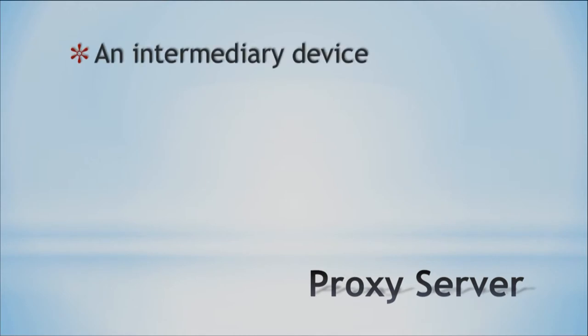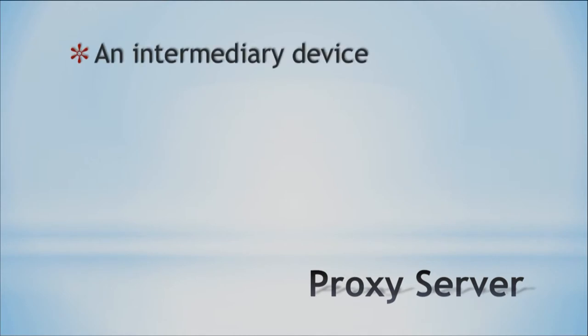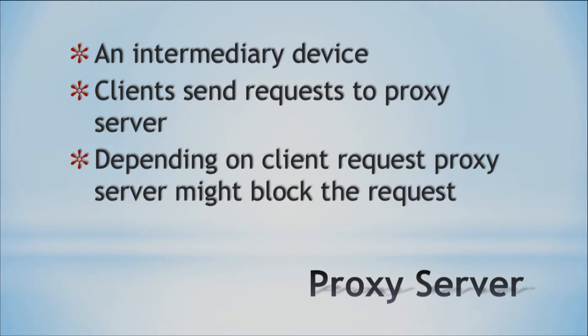Another device we can use to help protect our network is called a proxy server. This is an intermediary device. Clients send requests to the proxy server, and the proxy server either grants the request or blocks it — so it's filtering out data as well. The proxy server works in conjunction with our network and can grant or block requests, making sure we're only viewing content we're supposed to be viewing. For example, we could block YouTube or Facebook, and anyone on our network trying to access those sites would be denied. But if they went to Google, that would be granted.